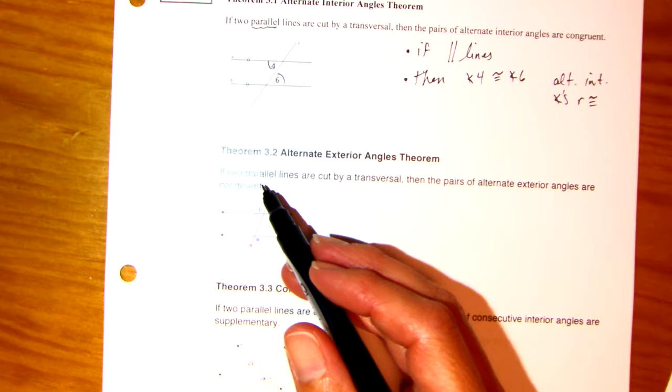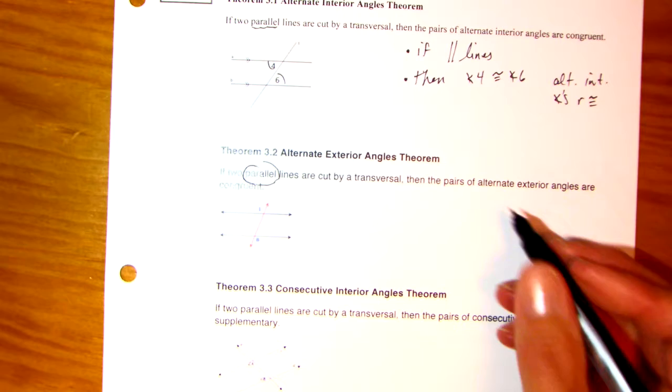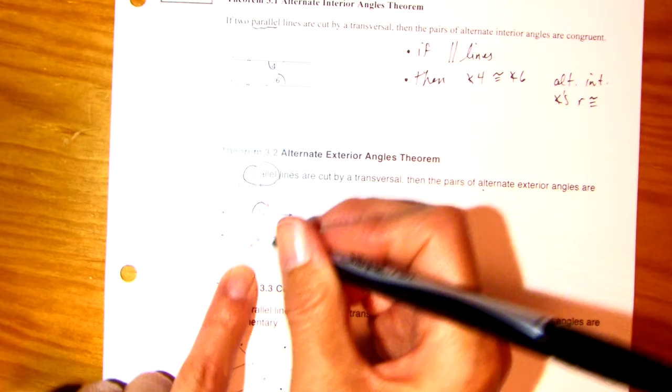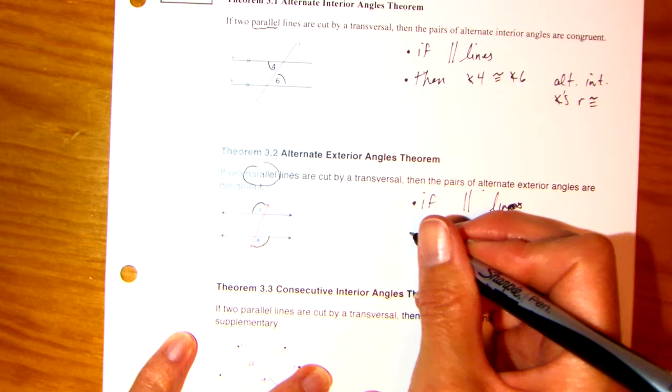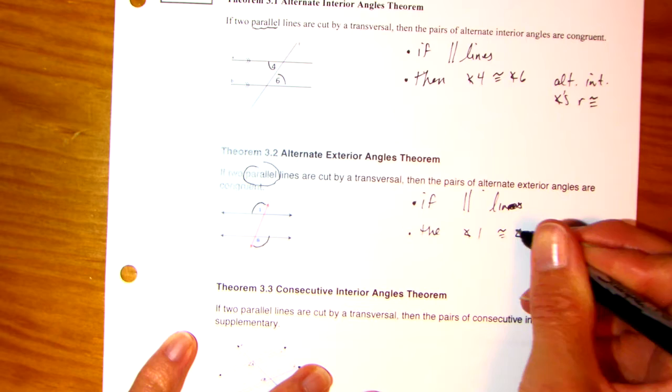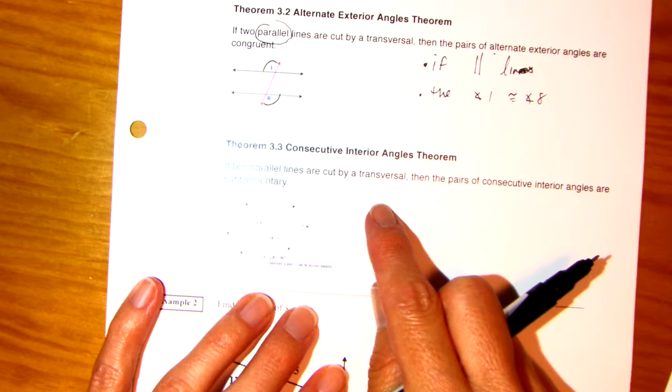Theorem 3.2. Alternate exterior angles theorem. If two parallel lines are cut by transversal, then the pair, notice we're starting with parallel lines again, then the pair of alternate exterior are congruent. So, that would be angles 1 and angle 8. So, we're starting with if you have parallel lines, line, yes, there goes my spelling. Then, angle 1 is congruent to angle 8. And then, of course, 3.3, very similar.